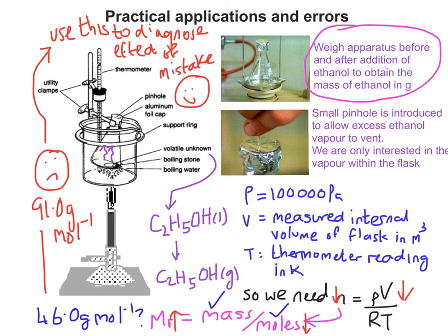This is something they'll expect you to be able to do in a paper. They'll introduce a theoretical practical and explain that a mistake was made, and you'll have to work through the calculation to see if you can deduce whereabouts that mistake might have had an effect. In other words, will it make your final value bigger or smaller than what you were hoping to get?